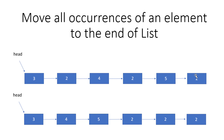There is another case: when the head node itself is the target value. In that case, we don't have any previous — previous is null — but we still need to move that value to the end. So we move that 2 to the end and update the head to the next node. Again, if the new head is also a 2, previous is still null, so we move it to the end and update head to the next node — like 4.